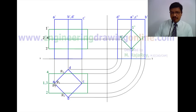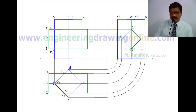Now project these intersection points to the front view. Projecting P1 and P3 gives P1 prime and P3 prime on their respective projectors in the front view. From P2 and P4, drawing projectors gives P2 prime in the front view. P4 prime is directly behind P2 prime and is not visible from the front view — it is on the back side.